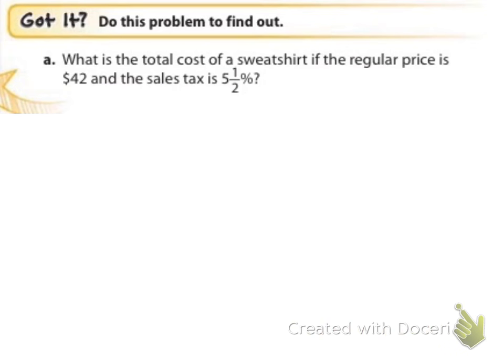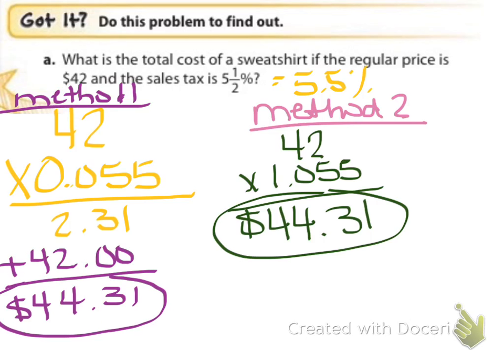So these are our two methods, method one and method two. You can use whichever method you'd like to do a. Again, this time they've used a fraction here, but I hope that you guys have figured out by now how to change that fraction into a decimal. I changed it to 5.5%. Then I'm going to multiply in method one, $42 times 0.055 and get $2.31 in tax. I'm going to add that $2.31 to my original price of $42 and I get a total of $44.31.